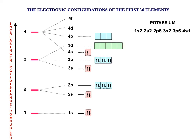For potassium, one might expect the electron to go into the 3D subshell first, but actually it goes into the 4S subshell because the 4S subshell is at a slightly lower energy level. Calcium also fills into the 4S subshell before we start going into the 3D subshell.